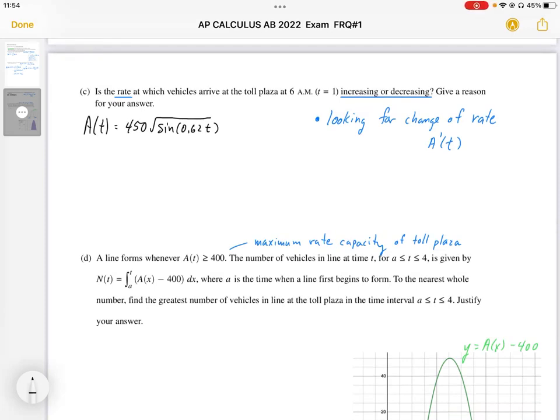Part C for question number one asks, is the rate at which the vehicles arrive at the toll plaza at 6 a.m. or t equals 1 increasing or decreasing? Give a reason for your answer.